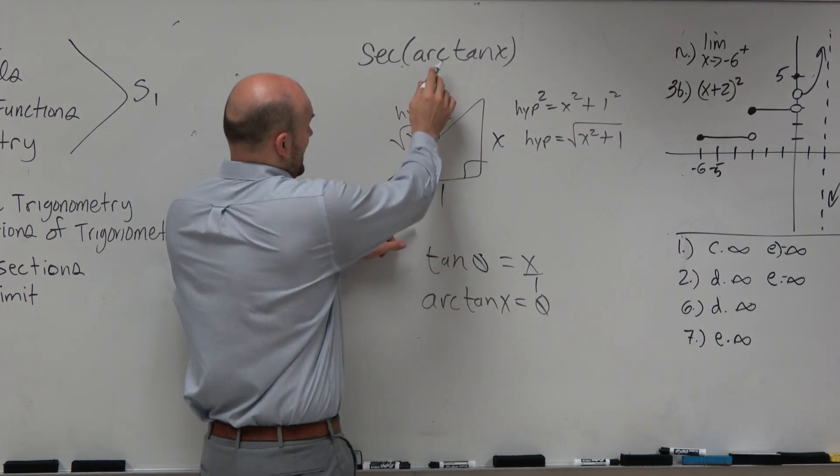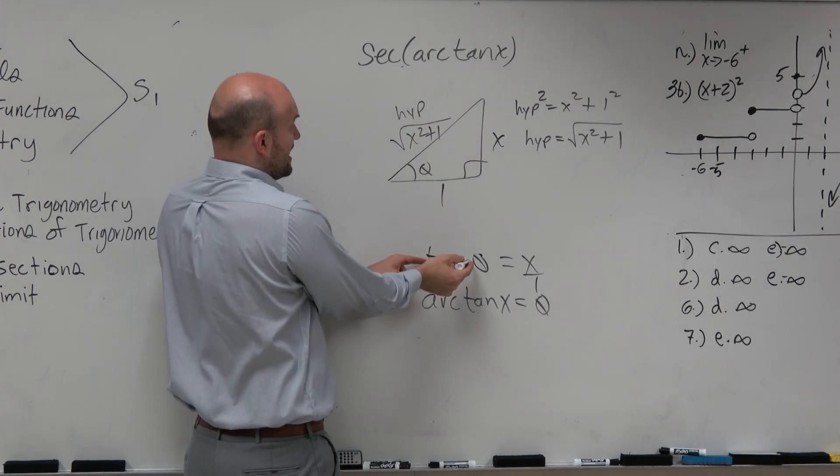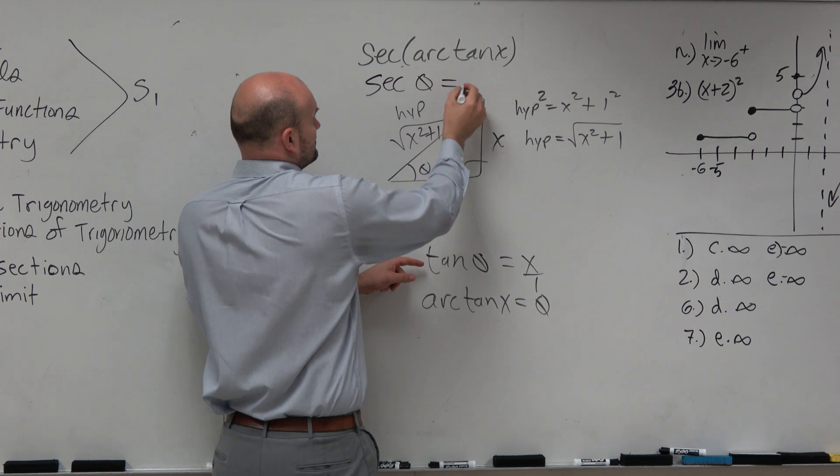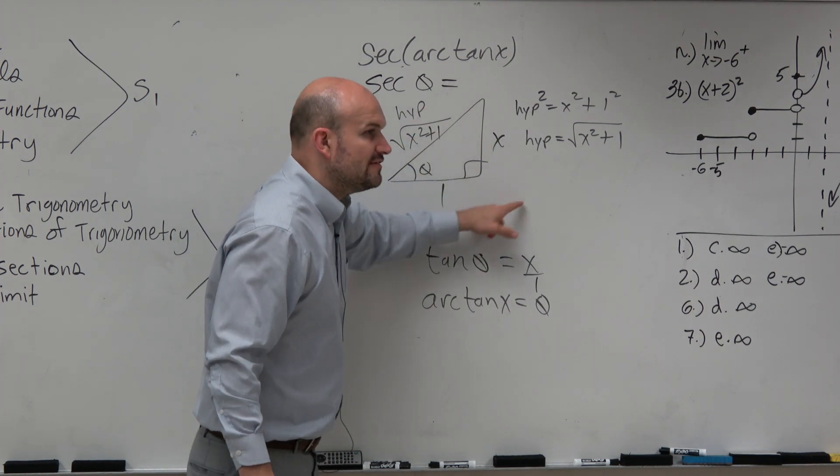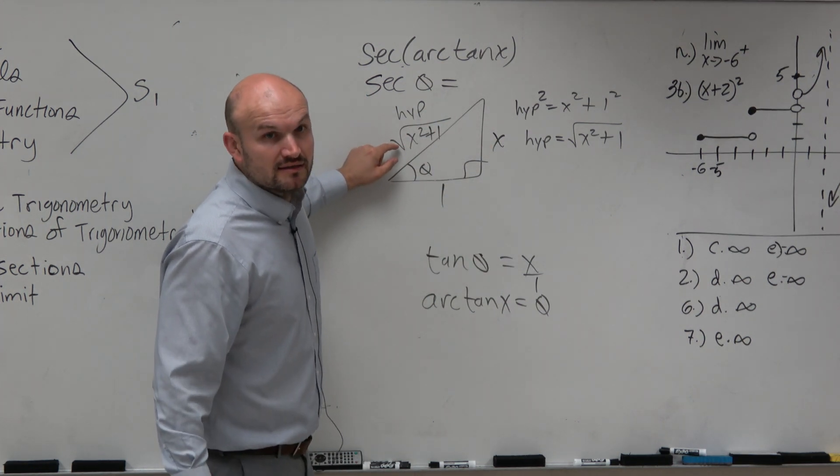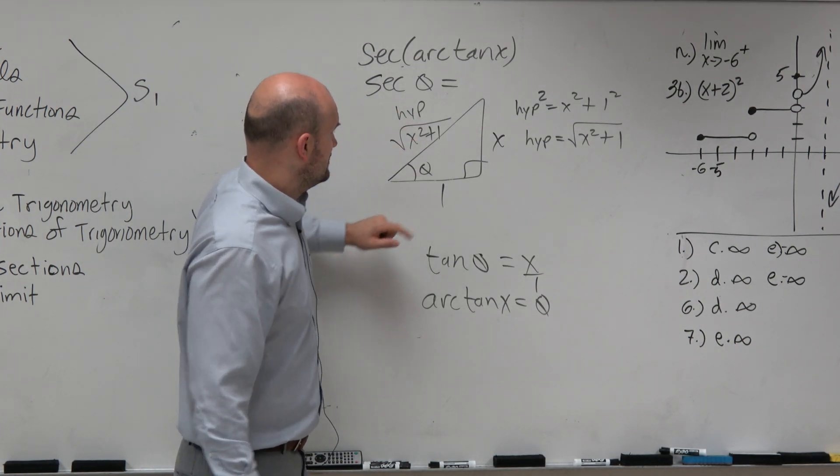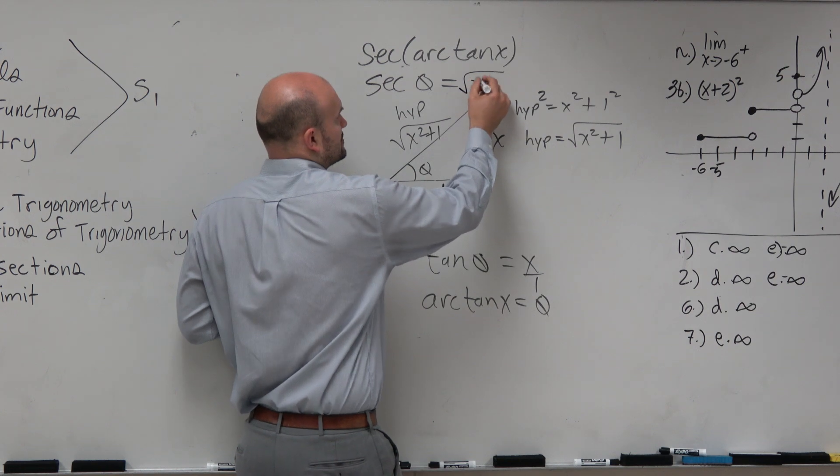Again, so as we mentioned, this gives us this theta, right? So now the next question is, what is the secant of theta? Do we have now enough information in this triangle to figure out the secant of theta? Yes, secant of theta is hypotenuse over adjacent. So that's just going to equal x squared plus 1.